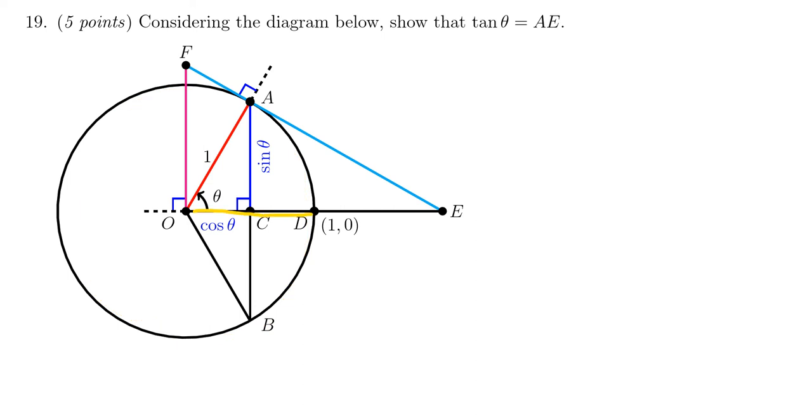Notice we have two examples of radii of this circle being length 1, so this is the unit circle. Using this unit circle diagram, we need to prove that tangent of theta, where theta is this angle in consideration here, is equal to the length AE. So we're trying to show that this distance right here is the same thing as tangent of theta.